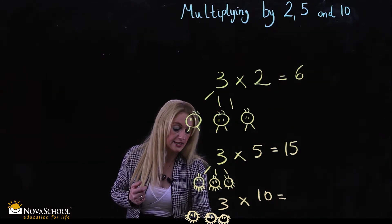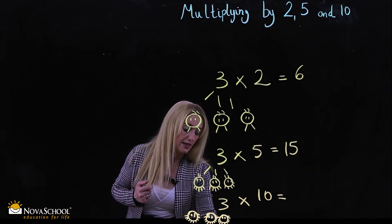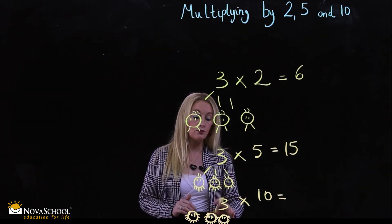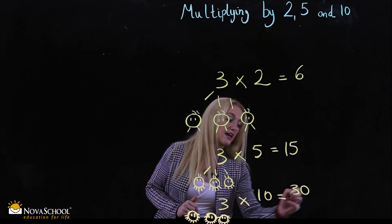Let's write it on the board. Ten, twenty, thirty. These are our monsters. Three times ten is thirty.